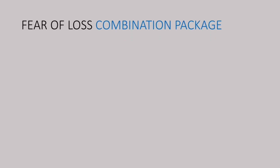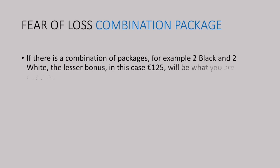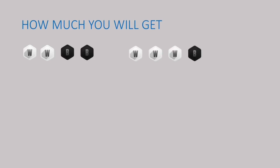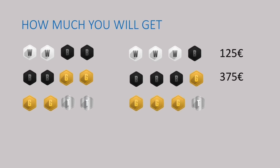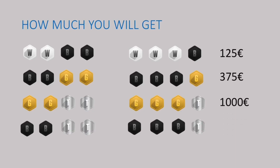Fear of Loss combination packages: if there is a combination of packages — for example 2 black and 2 white — the lesser bonus, in this case 125 euros, is what you are qualified to keep. So 2 white and 2 black, or 3 white and 1 black, all get 125 euros. With 2 black and 2 gold, or 3 black and 1 gold, you get 375 euros. If you have 4 titanium packages, you get 3,000 euros. This model is recommended.